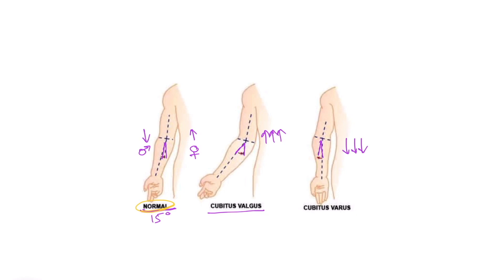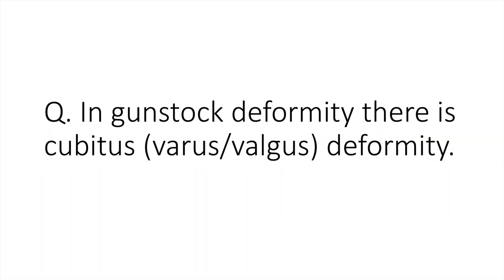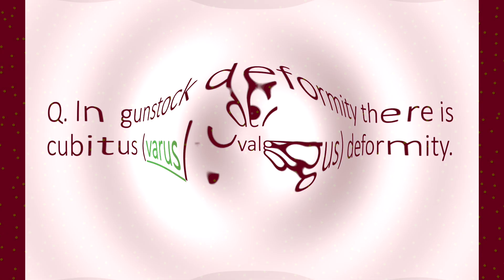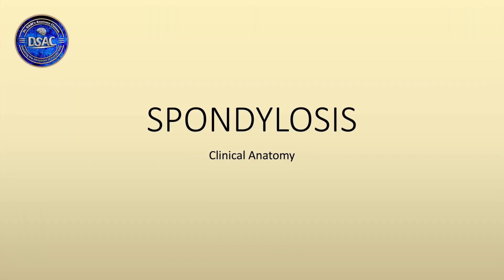But if the longitudinal axis of the forearm is directed medially, the carrying angle will be found laterally, and this is called cubitus varus deformity. In gunstock deformity, there is cubitus varus deformity.